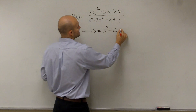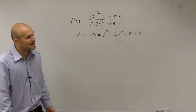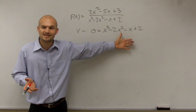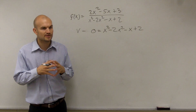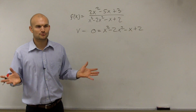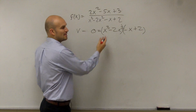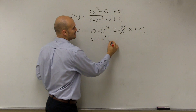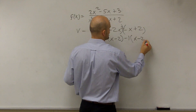0 equals x cubed minus 2x squared minus x plus 2. Now, you've got to look at our techniques. It's not a linear equation, so you can't just solve for x. When you have four terms, the factoring technique we use is factoring by grouping. Group the first two terms and group the last two terms, then factor out separately. So 0 equals x squared times x minus 2, and here I can factor out a negative 1, giving x minus 2.